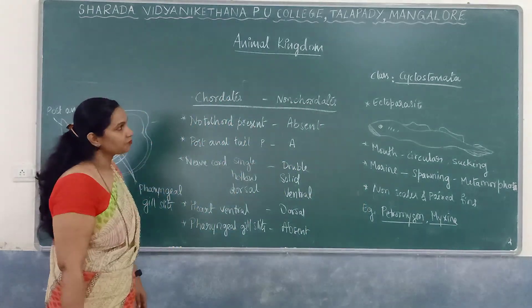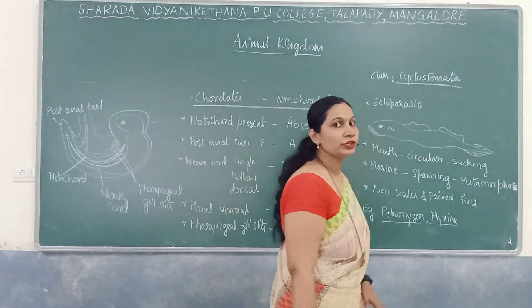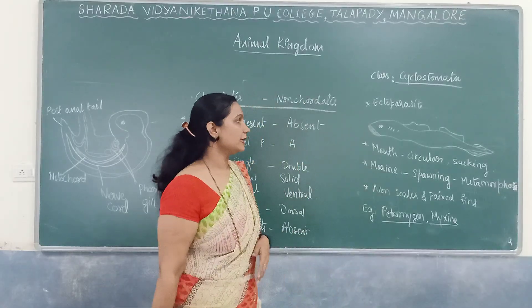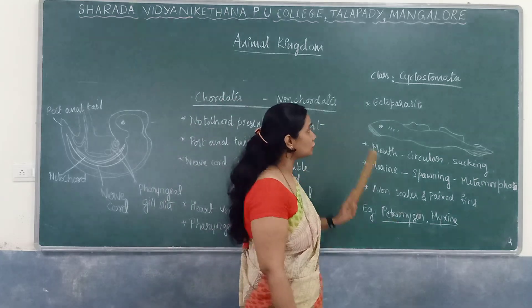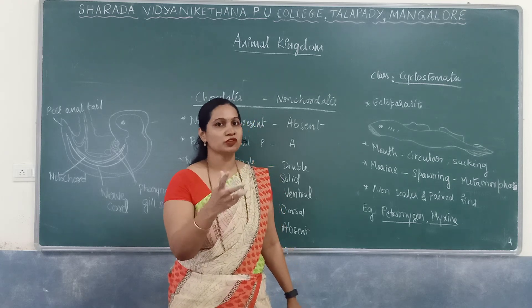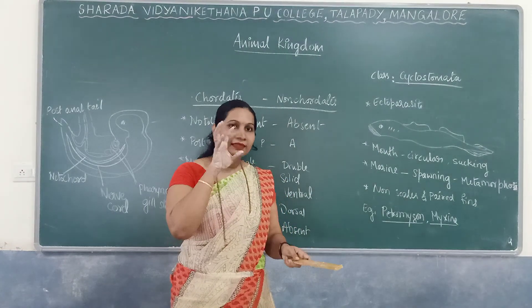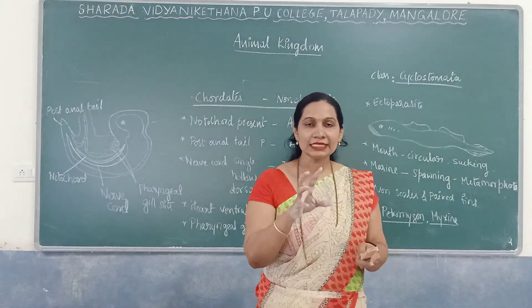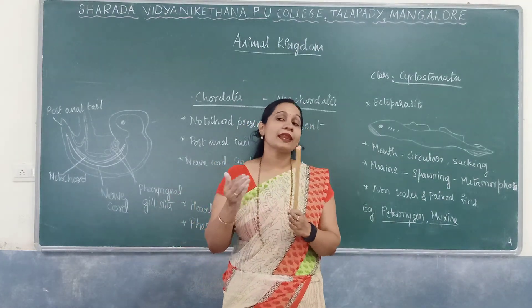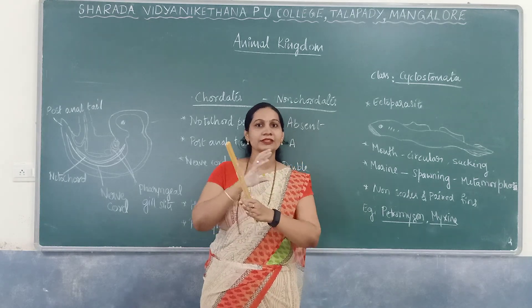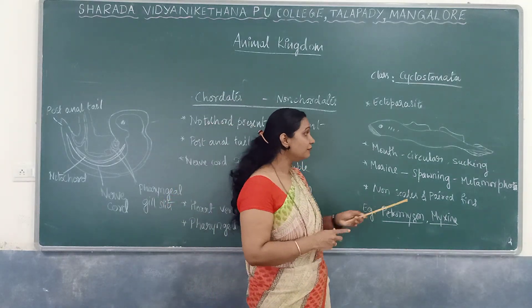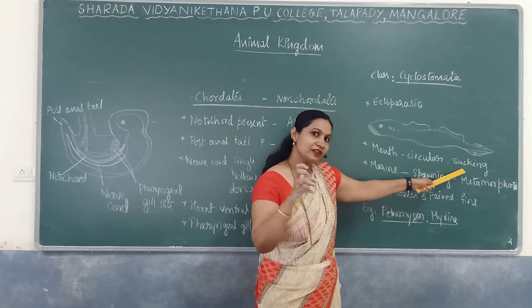The classes of Chordata are: Cyclostomata, Chondrichthyes, Osteichthyes, Amphibia, Reptilia, Aves, and Mammalia. Regarding Cyclostomata: 'cyclo' refers to circular and 'stomata' refers to mouth. They have a circular, sucking type of mouth. They are ectoparasites, attached to the surface of larger fishes from which they suck nutrients.